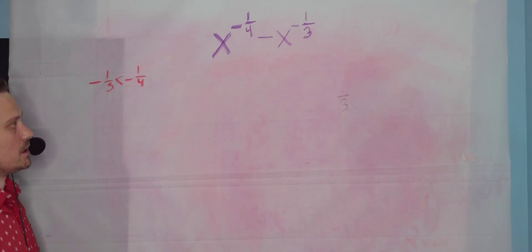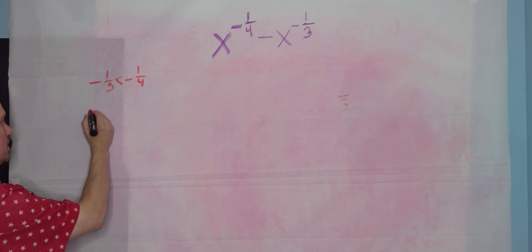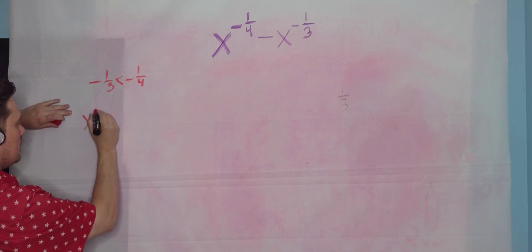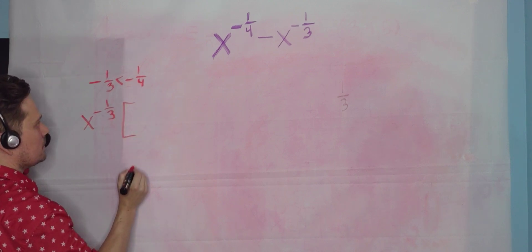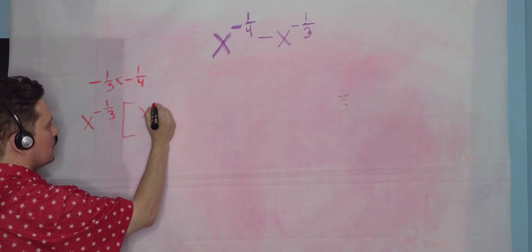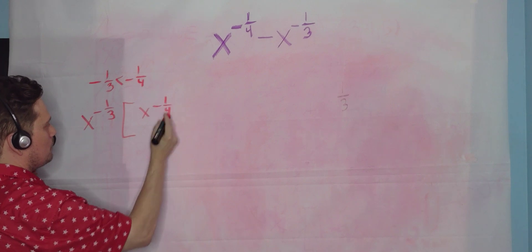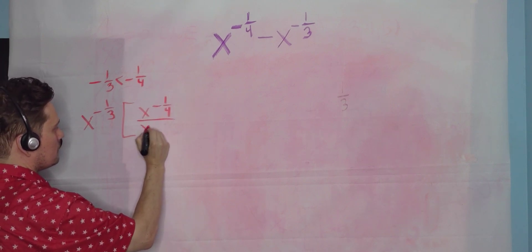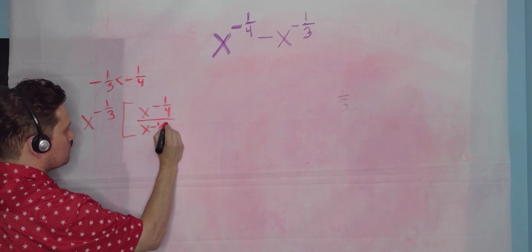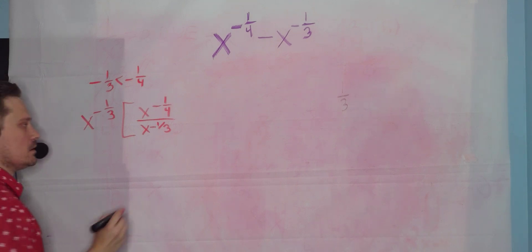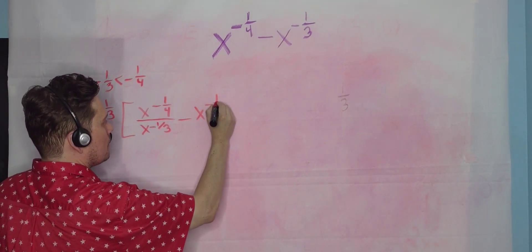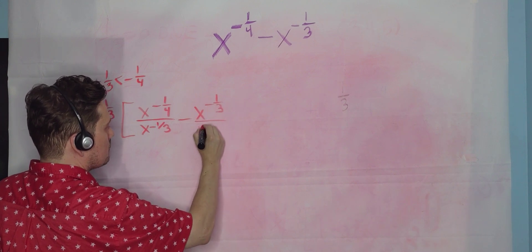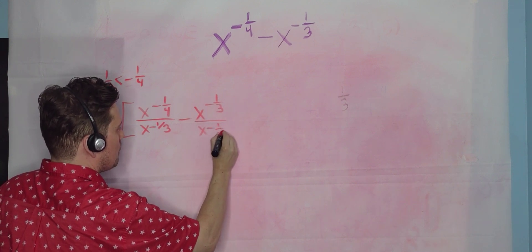So you're going to pull x to the negative one-third out like this, aside of parentheses. You're going to say x to the negative one-third here. You pull that outside, and then what's left within there will be x to the negative one-fourth divided by x to the negative one-third. And then you're going to have minus the same thing, x raised to the negative one-third divided by x raised to the negative one-third, like this.